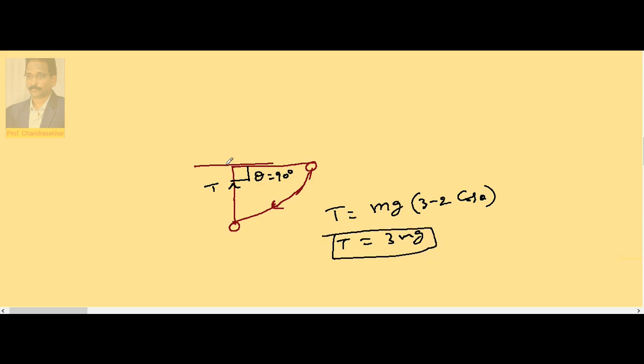So in the case of a simple pendulum, if it is released from the horizontal position, when it reaches the lowest point, the tension possible maximum value is 3mg. Suppose if the string cannot withstand this 3mg, then string breaks at the lowest position. So the maximum tension possible in the case of horizontal oscillating pendulum is 3mg.